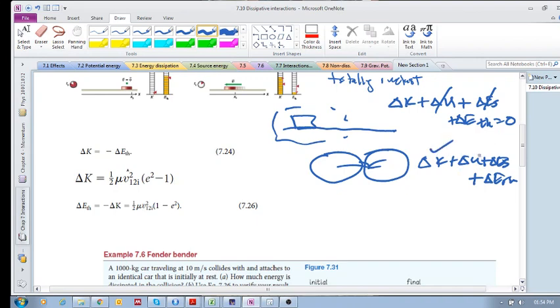At some point there will be an increase in potential energy because these objects will deform and then go back to their original position. So temporarily in an elastic collision you will have some potential energy, but then it'll go back to its original position, so there will be no change in potential energy.